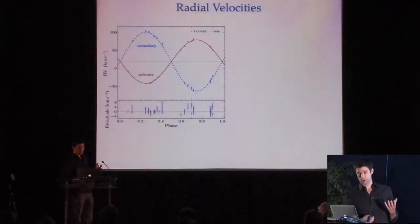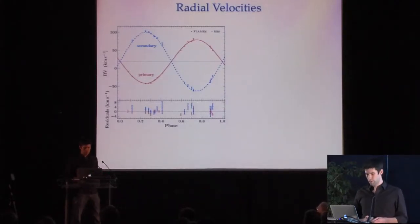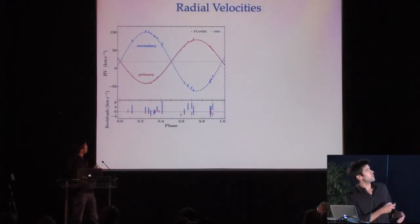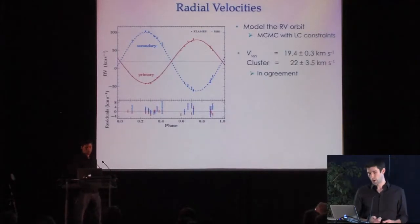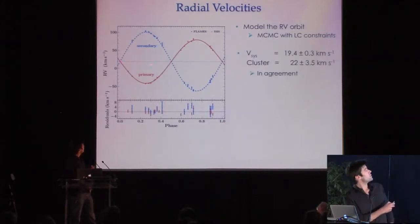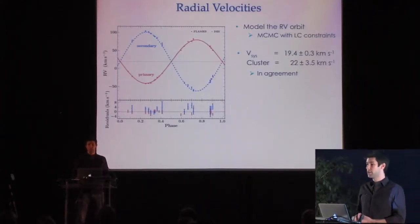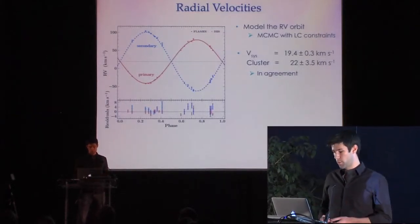Here I'm showing the phase-folded radial velocity curve of the system — the primary in red, secondary in blue. We model the radial velocities with constraints from our light curve solution to remain consistent with all available information. The systemic velocity of the system, shown by the gray line, is in agreement with the cluster's recessional velocity, indicating it's kinematically associated with the star-forming region.